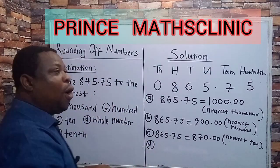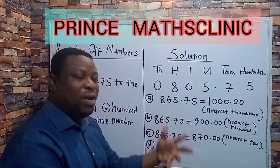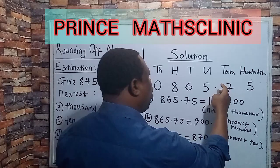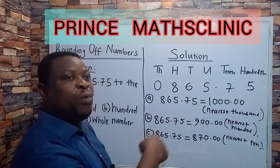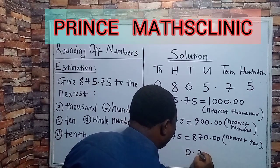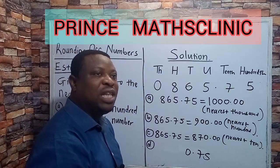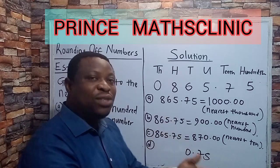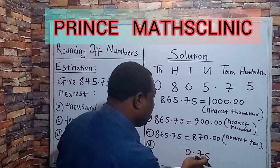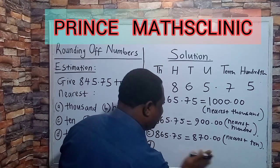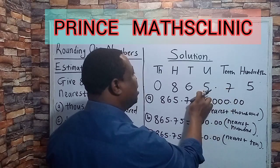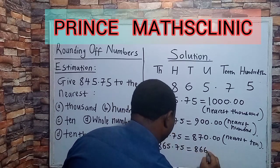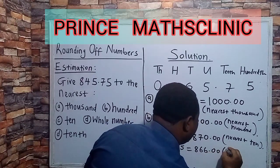D is the nearest whole number. A whole number means a number that is complete. This number is a decimal, so to get the nearest whole number we need to do away with the decimal part. The decimal part is 0.75, which is like 75 out of 100 — and 75 out of 100 is closer to 100 than to 0. So you change the 7 to 1, add it to 5 — so 865.75 becomes 866.00. This is the nearest whole number.